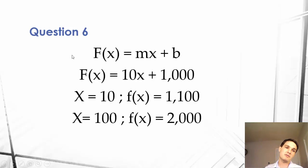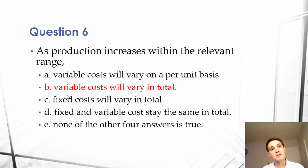So the total cost is going up proportionally, but our fixed cost is going down per unit but remaining constant. So that would make our answer B. Variable costs will vary in total. As we increase production, our variable costs will increase in total. That's the key there.